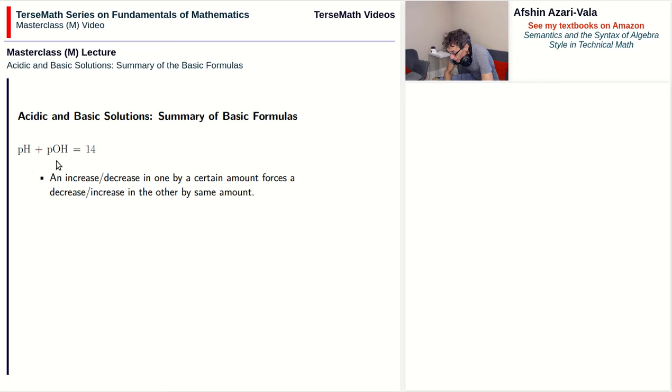Vice versa, you can change the value of pOH and observe a similar kind of relationship in pH. In terms of rearrangement, this is a very easy formula. Solving for pH: we take pOH which is being added on the left, move it to the right, and subtract. Solving for pOH would be similar, and I will leave that to you.